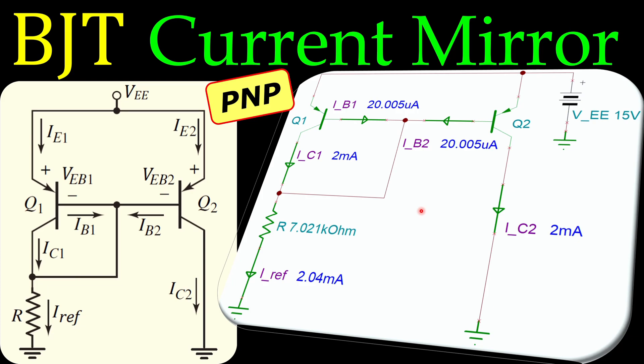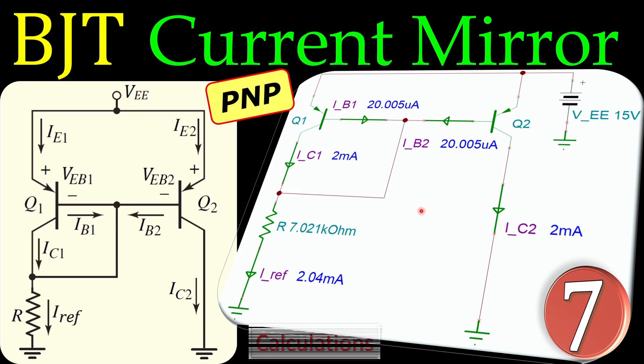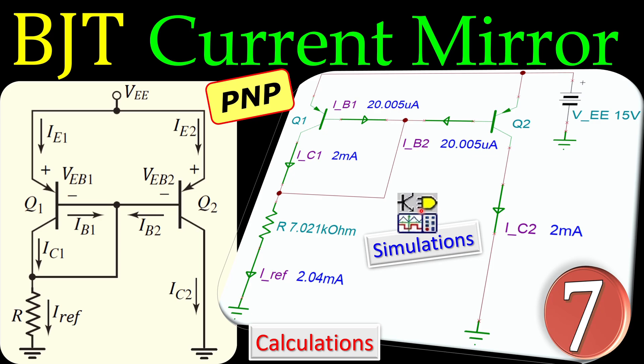Hi everyone and welcome to a new video about current sources using BJTs. In this example, example number 7, we will discuss the PNP version of the simple current mirror. Of course we will work out the calculations in this example and also verify these in SPICE simulations.